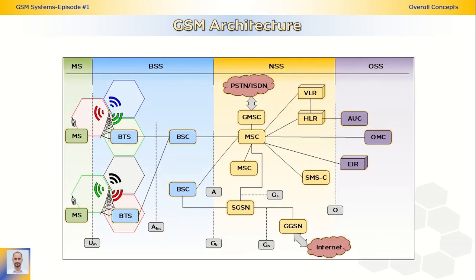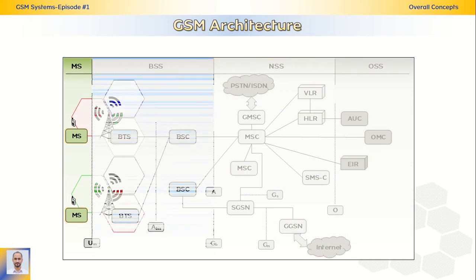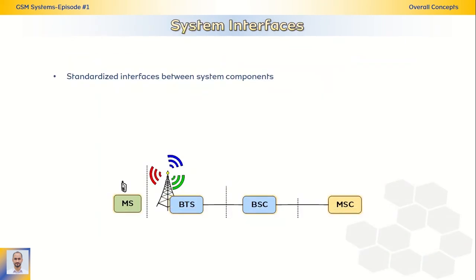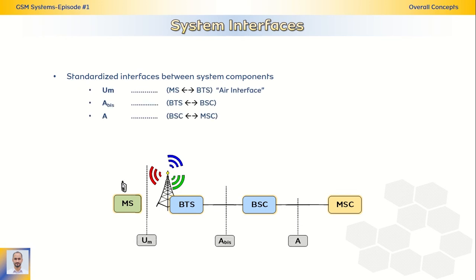The GSM architecture. There are four main subsystems in the GSM system: the Mobile Station, Base Station Subsystem, Network Switching Subsystem, and Operation Support Subsystem. Each subsystem has its own components with interfaces between them. The GSM system has standardized interfaces between system components. For example, we have Um for the air interface between the mobile station and the BTS; ABIS between BTS and BSC; and the A interface between the BSC and the Mobile Switching Center, or MSC. Each of these interfaces has its own protocols and technologies to support functionality and data transfer between system entities.